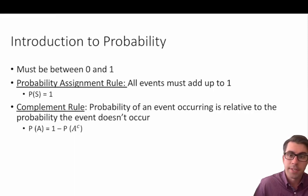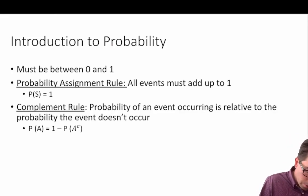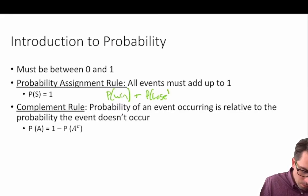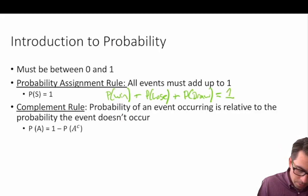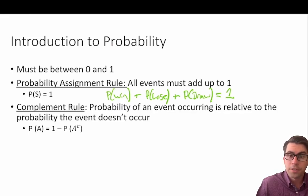Let's take the game of chess as an example. If you were playing chess, the possible outcomes are: you either win, lose, or draw. Each of these probabilities may have a different numerical value, but all three outcomes will sum to 1, because those are the only three outcomes that can happen. There is no fourth option, so the sum of those probabilities will add to 1.